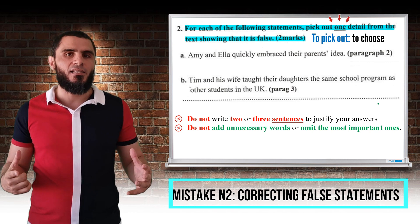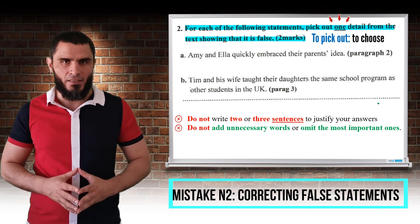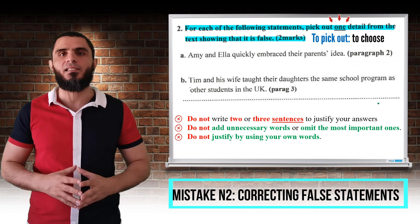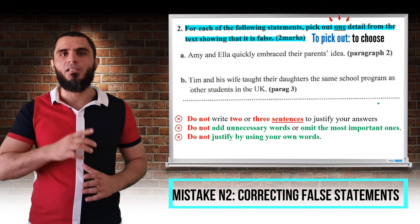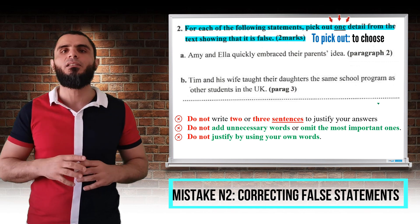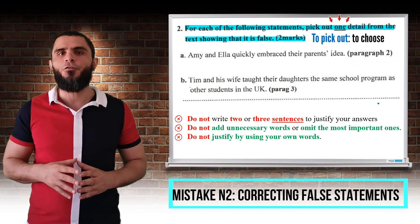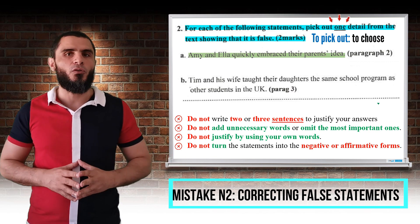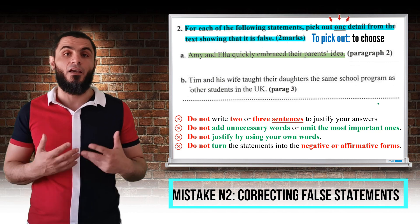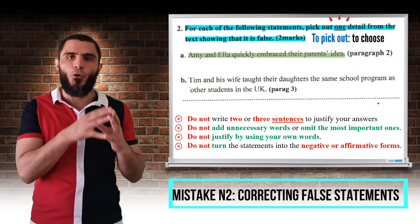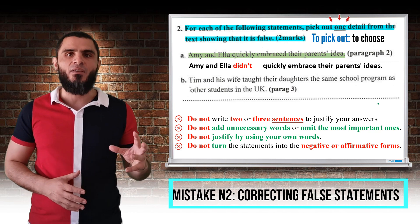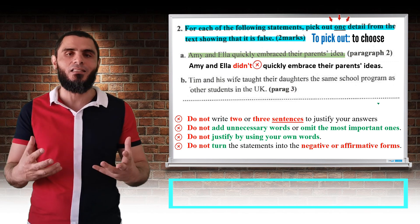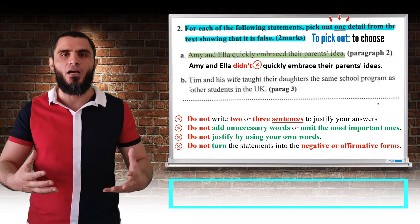Number two: do not add unnecessary words or omit the most important ones. Number three: do not justify your answers by using your own words or by paraphrasing sentences from the text. The question says pick out one detail from the text, and 'one' is underlined. Number four: do not turn the statements into the negative or the affirmative forms. For example, if the statement says 'Amy and Ella quickly embraced their parents' ideas,' some students write 'Amy and Ella didn't quickly embrace their parents' ideas' — this is incorrect because you didn't give one detail from the text.